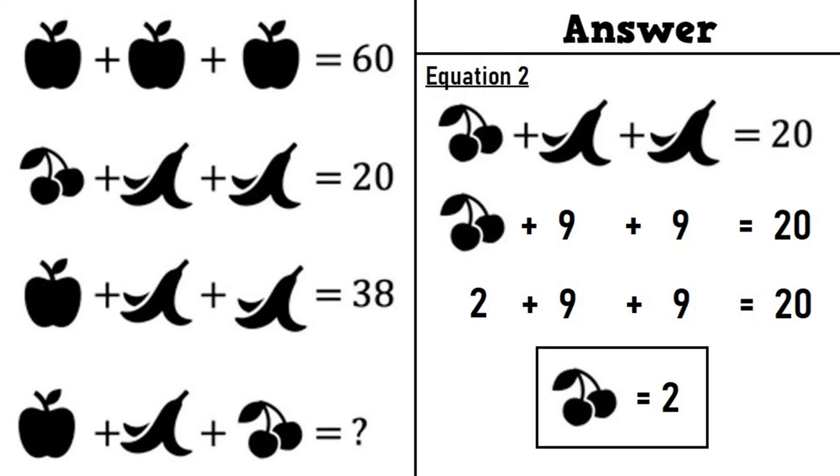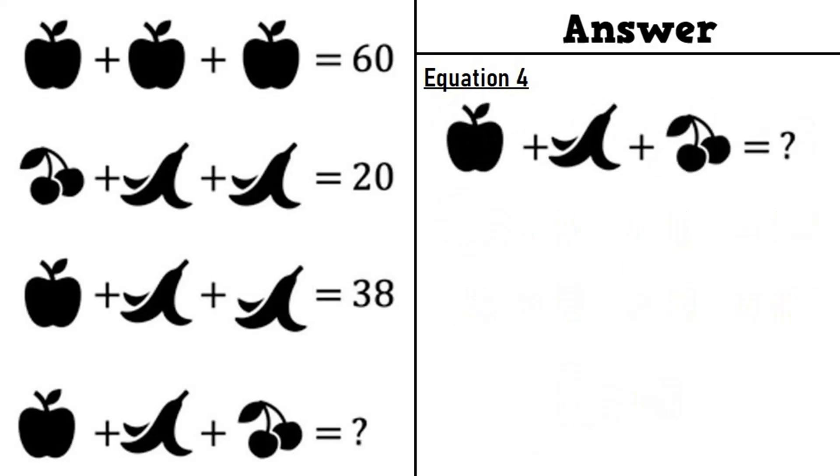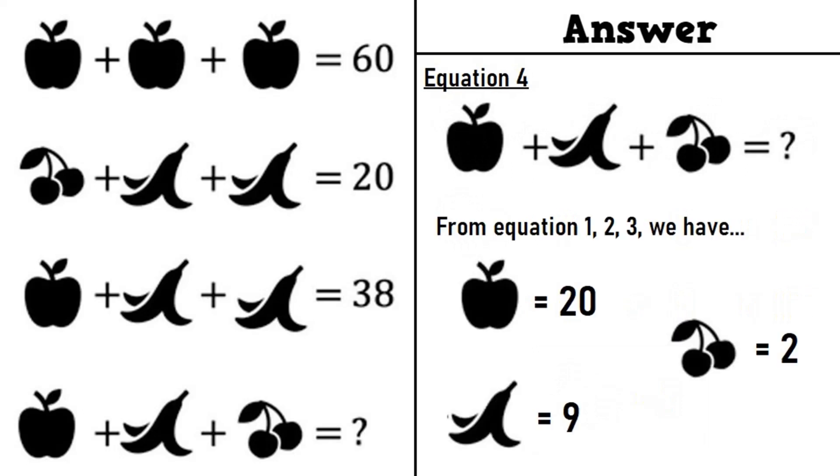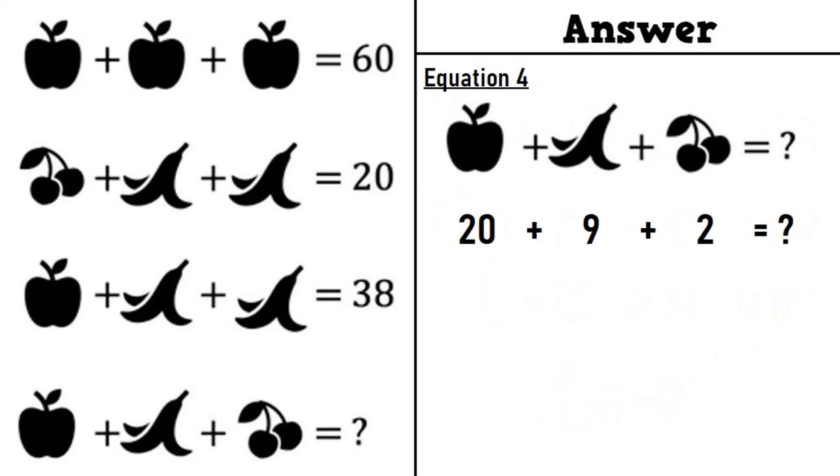Moving on to the last equation, which is equation number 4, an apple plus a banana plus 2 cherries is equal to question mark. From equations 1, 2, and 3, we have an apple is equal to 20, a banana is equal to 9, 2 cherries is equal to 2. Putting all these values in equation number 4, we have 20 plus 9 plus 2 is equal to question mark. So if we add them all, we will get the correct answer as 31.